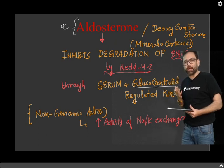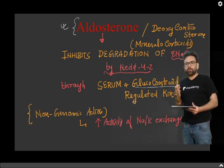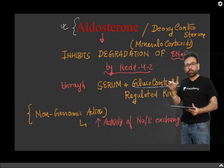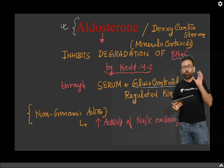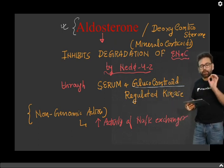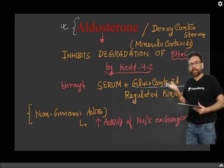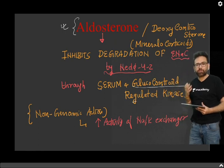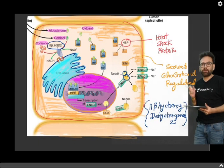There is one more non-genomic action. Steroids have a non-genomic action — they work as if acting as a protein, with a receptor on the cell membrane, so non-genomic actions are very fast while genomic actions are quite slow. The non-genomic action of aldosterone is to increase the activity of the sodium-potassium exchanger. So there are many actions of aldosterone, which can be understood better with this diagram.